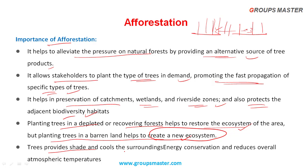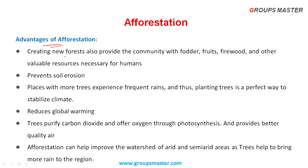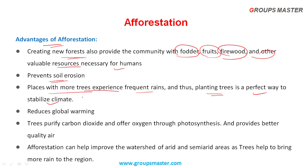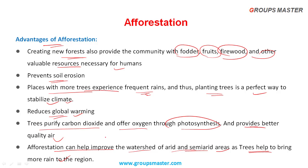Advantages of afforestation: It creates energy conservation and reduces overall atmospheric temperatures. Creating new forests provides the community with fodder, fruits, livelihood and other valuable resources. It also prevents soil erosion. Places with more trees experience more frequent rains, so planting trees is a perfect way to stabilize climate. Trees purify carbon dioxide and offer oxygen through photosynthesis, providing better quality air and helping reduce global warming. Afforestation can help improve watershed conditions of arid and semi-arid areas, as trees help bring more rain to the region.